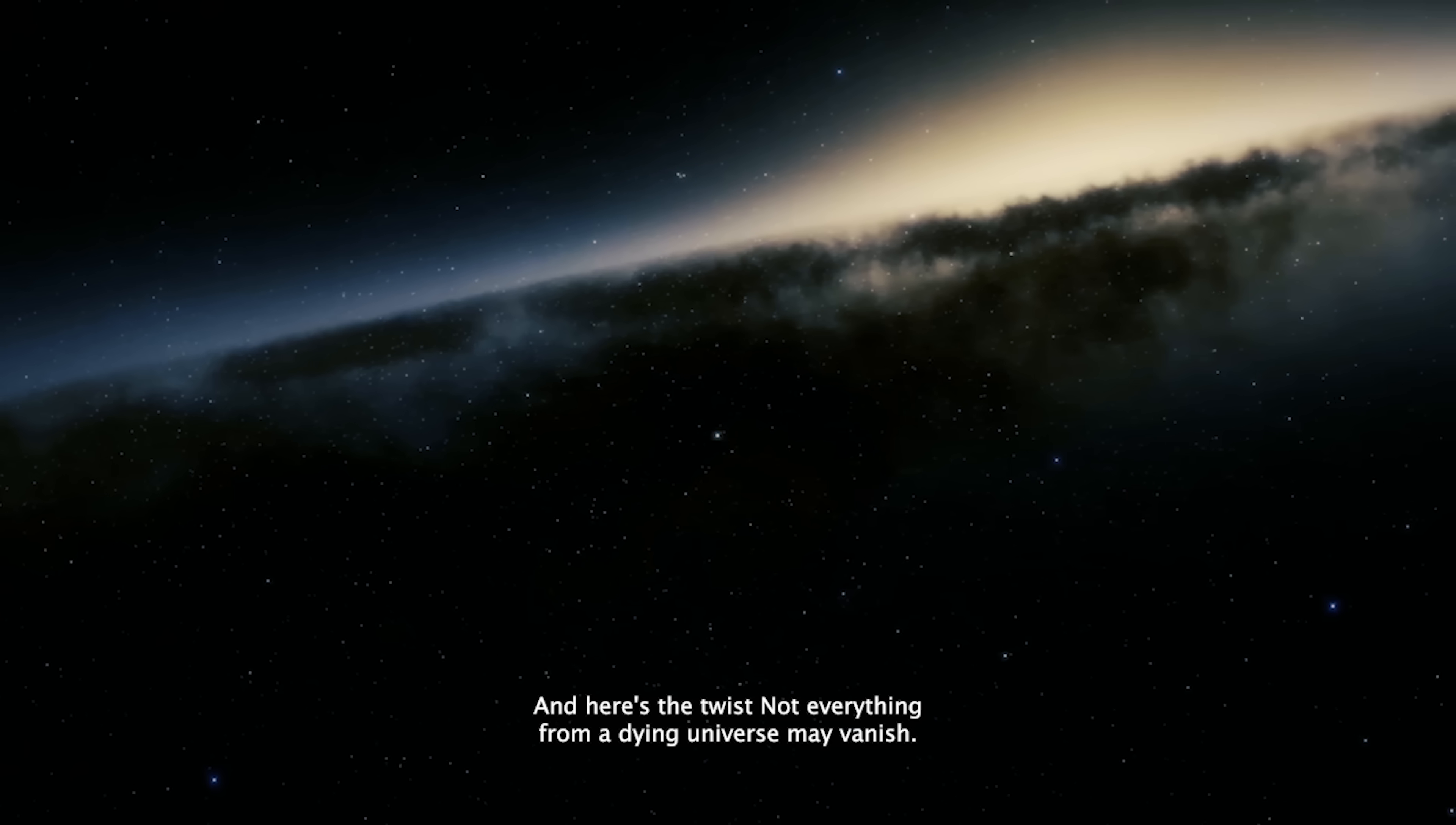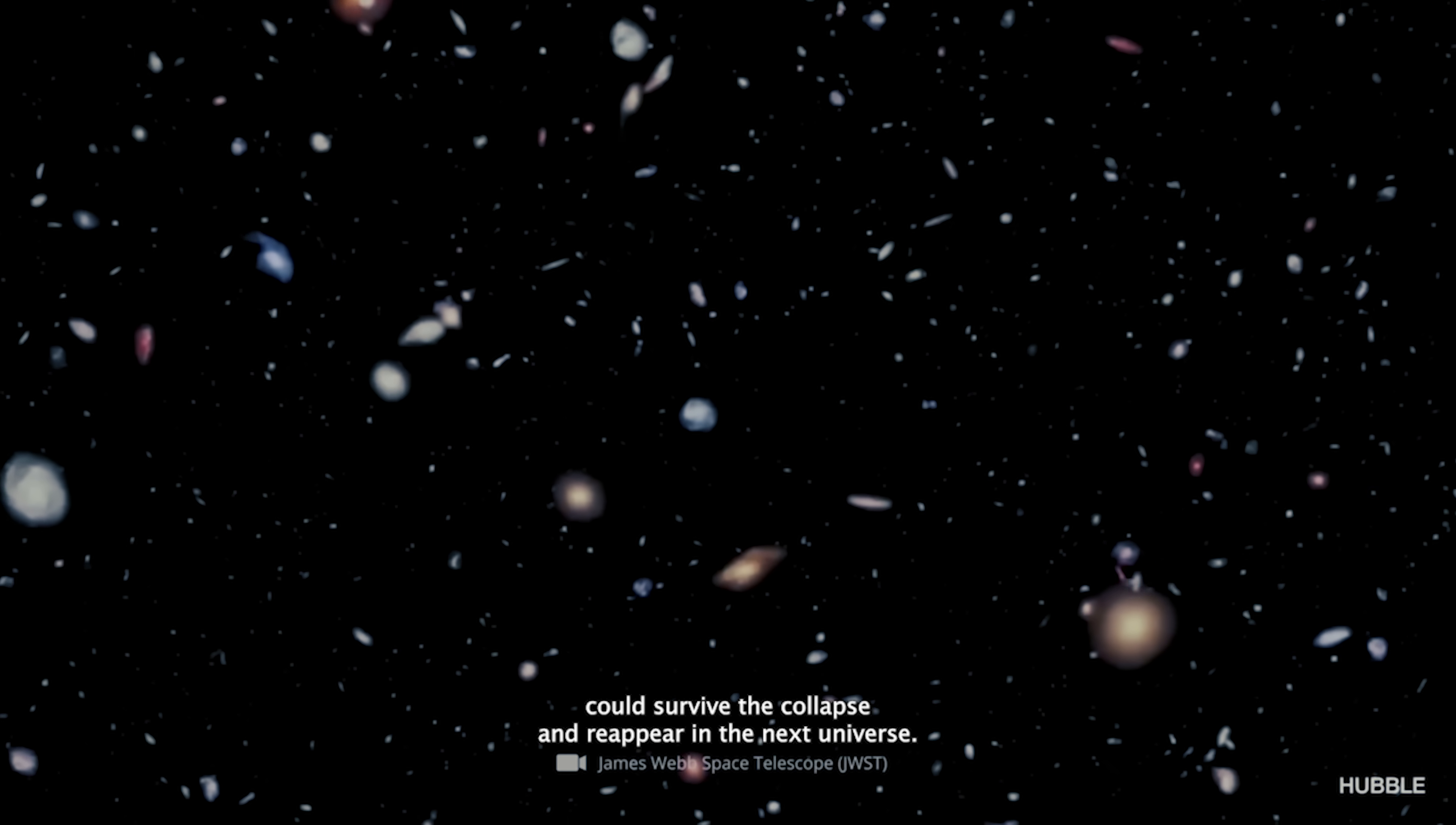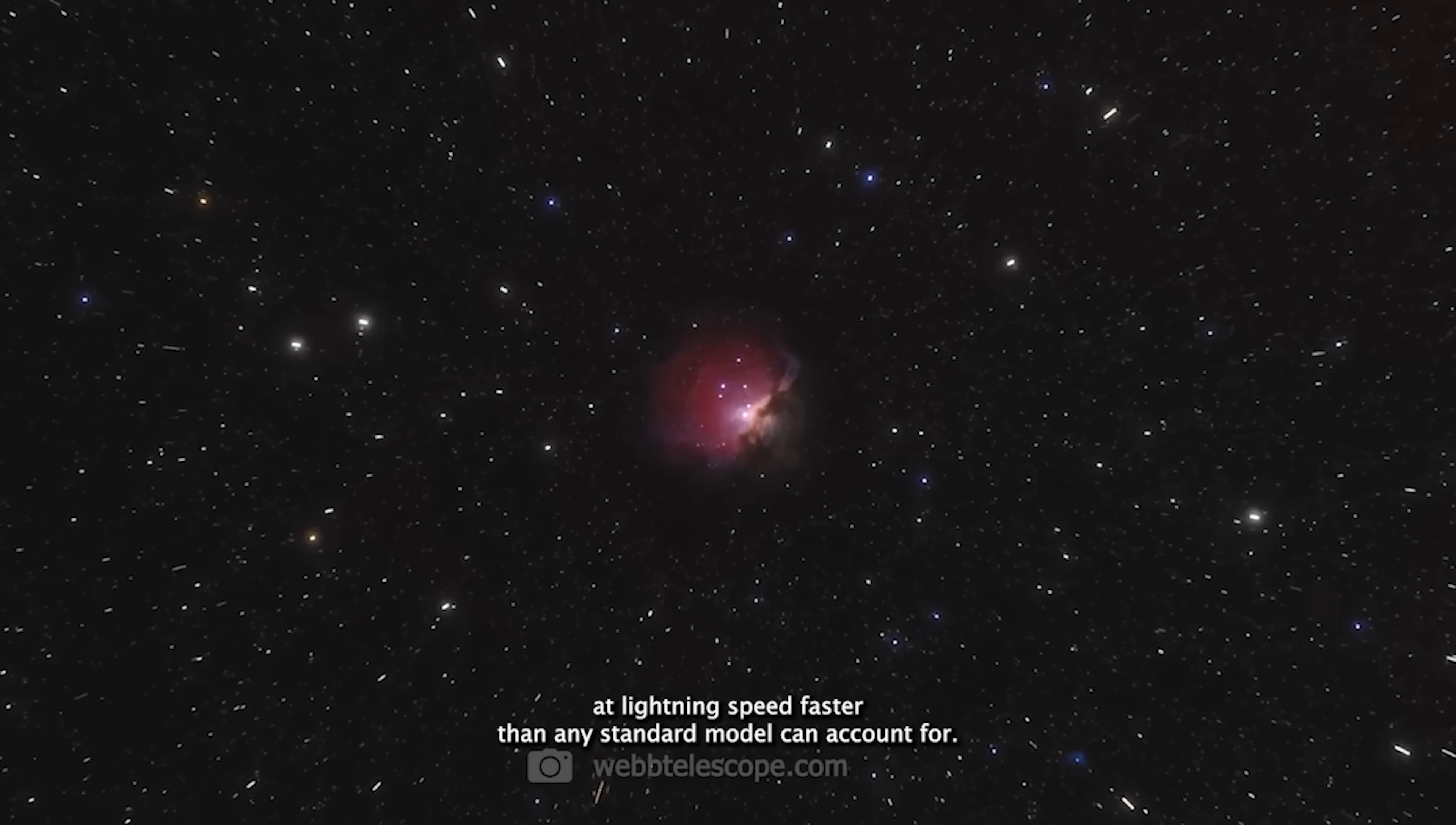And here's the twist. Not everything from a dying universe may vanish. Penrose theorized that certain features, like density fluctuations or even actual structures of matter, could survive the collapse and reappear in the next universe. This could explain why galaxies in our own cosmos seem to have formed at lightning speed, faster than any standard model can account for.